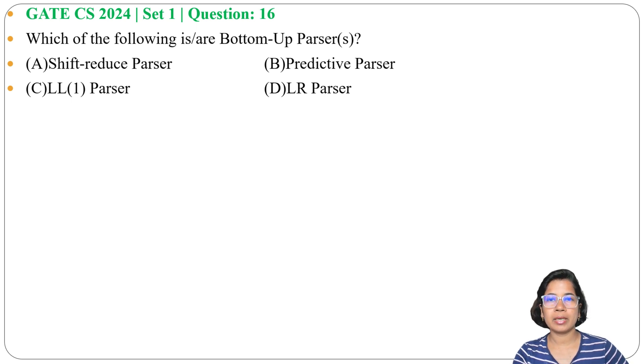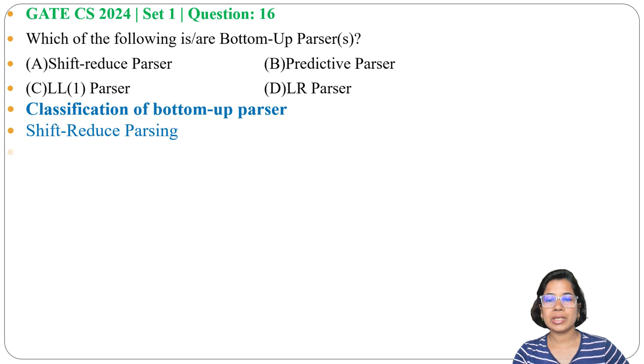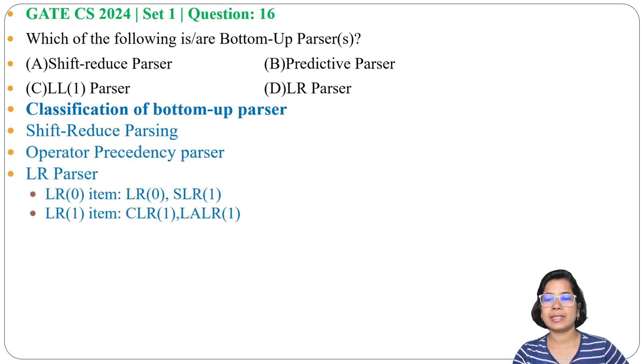Here, option A, shift-reduce parser, comes under bottom-up. Option B, predictive parser, comes under top-down. Option C, LL1 parser, comes under top-down. Option D, LR parser, comes under bottom-up. So option A and option D, shift-reduce parser and LR parser, come under bottom-up.